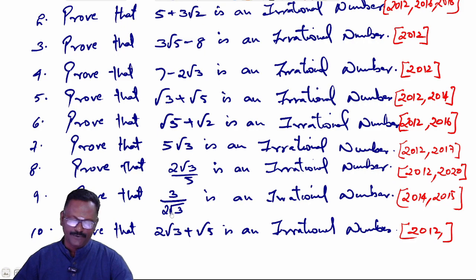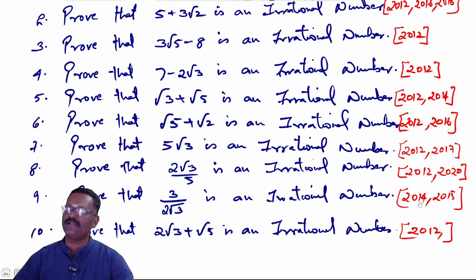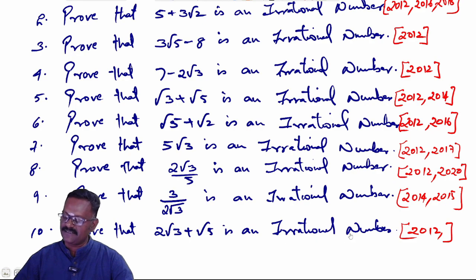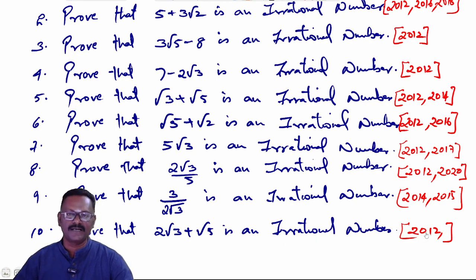Next question: Prove that 3/(2√3) is an irrational number, which appeared in 2014 and 2015. Next question: Prove that 2√3 + √5 is an irrational number, which appeared in 2012. All these questions are important — practice all of them thoroughly.